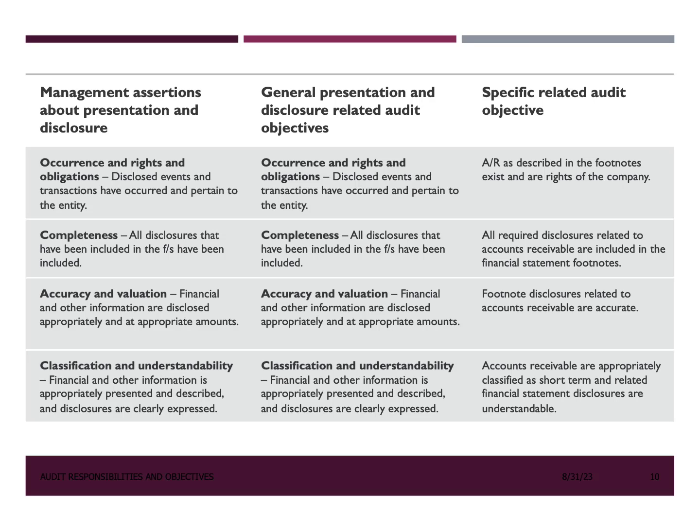Classification and understandability asserts that the information included in the financial statements has been appropriately classified, presented, and is clearly understandable. For example, management might assert that the financial statements properly categorize expenses into non-operating and operating categories, and the auditor's objective would be to review expense categorization and assess whether the presentation allows users to distinguish between expenses related to the company's core operations and those outside of them. Each assertion type is intended for a different aspect of the financial statements: transactions and events relate to the income statement, account balances relate to the balance sheet, and presentation and disclosure relate to the accompanying disclosures.